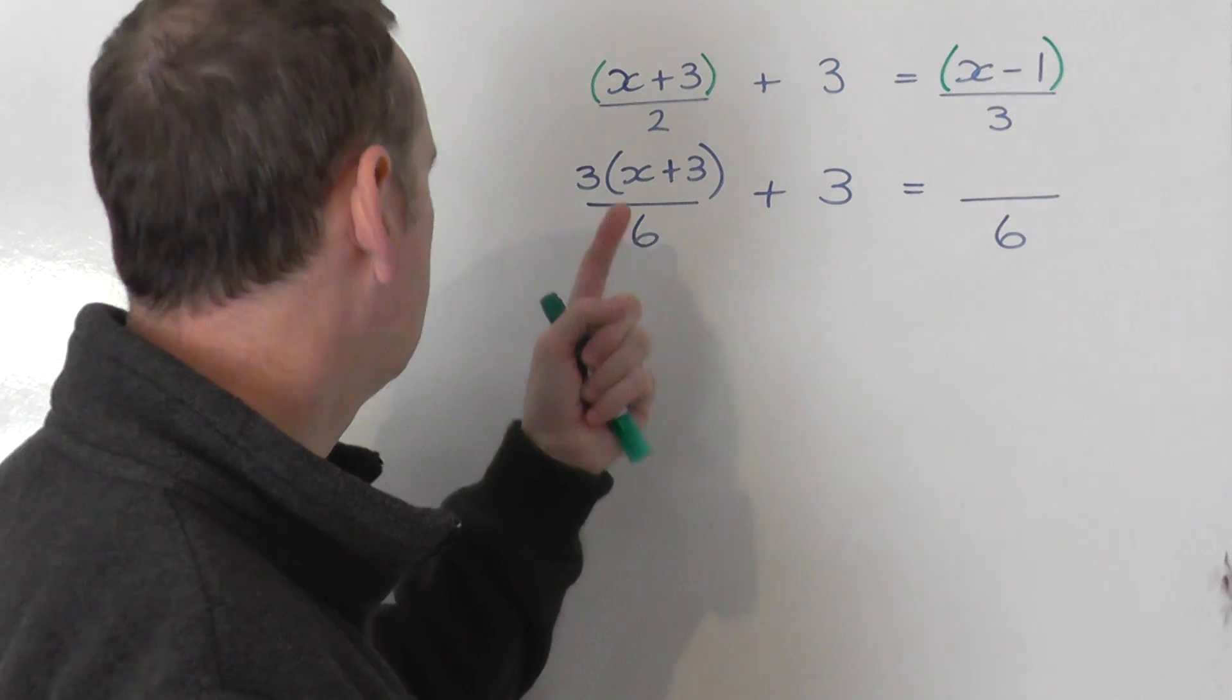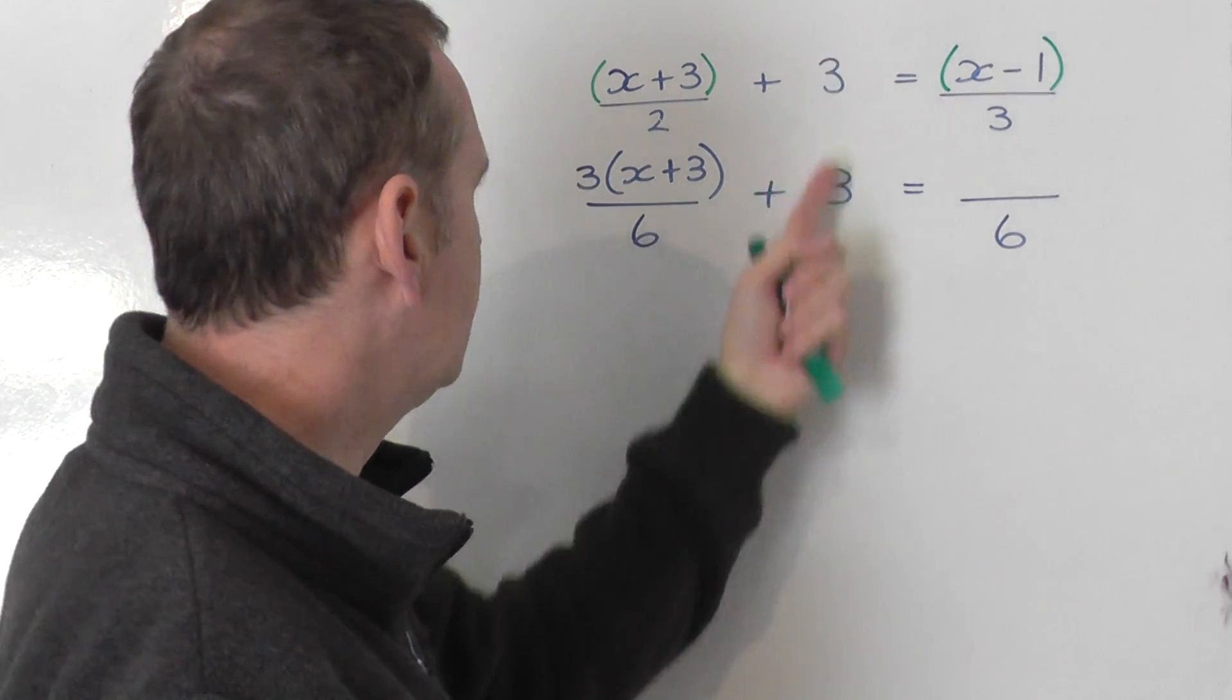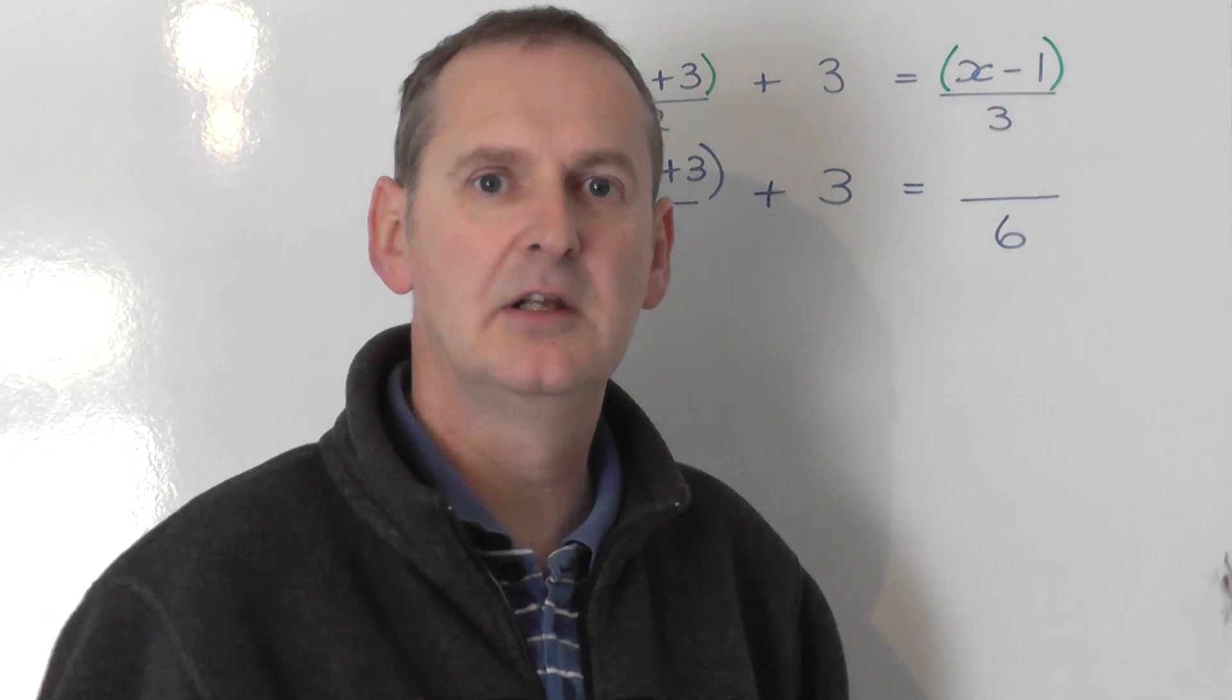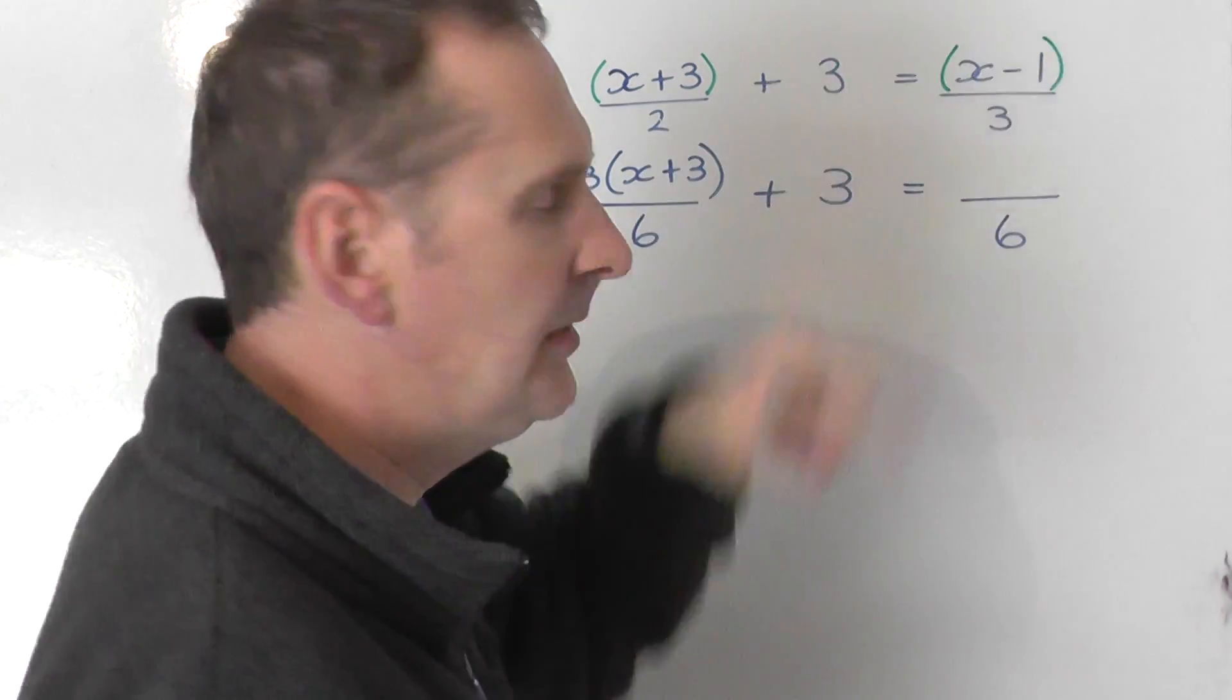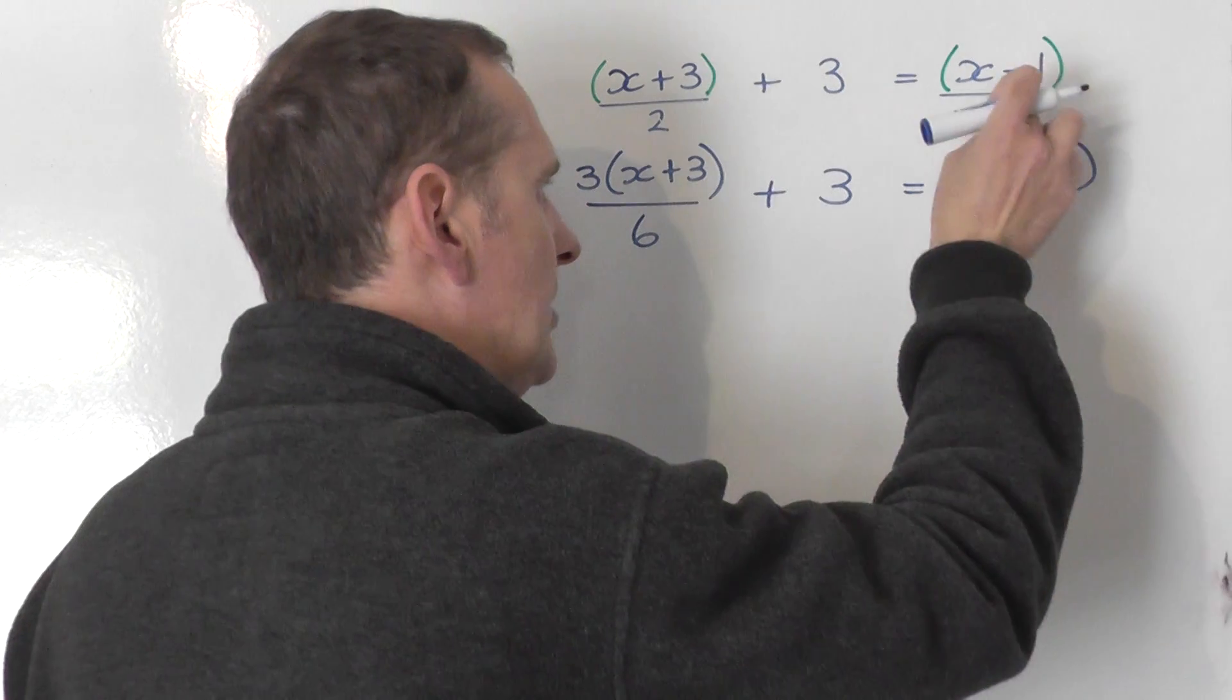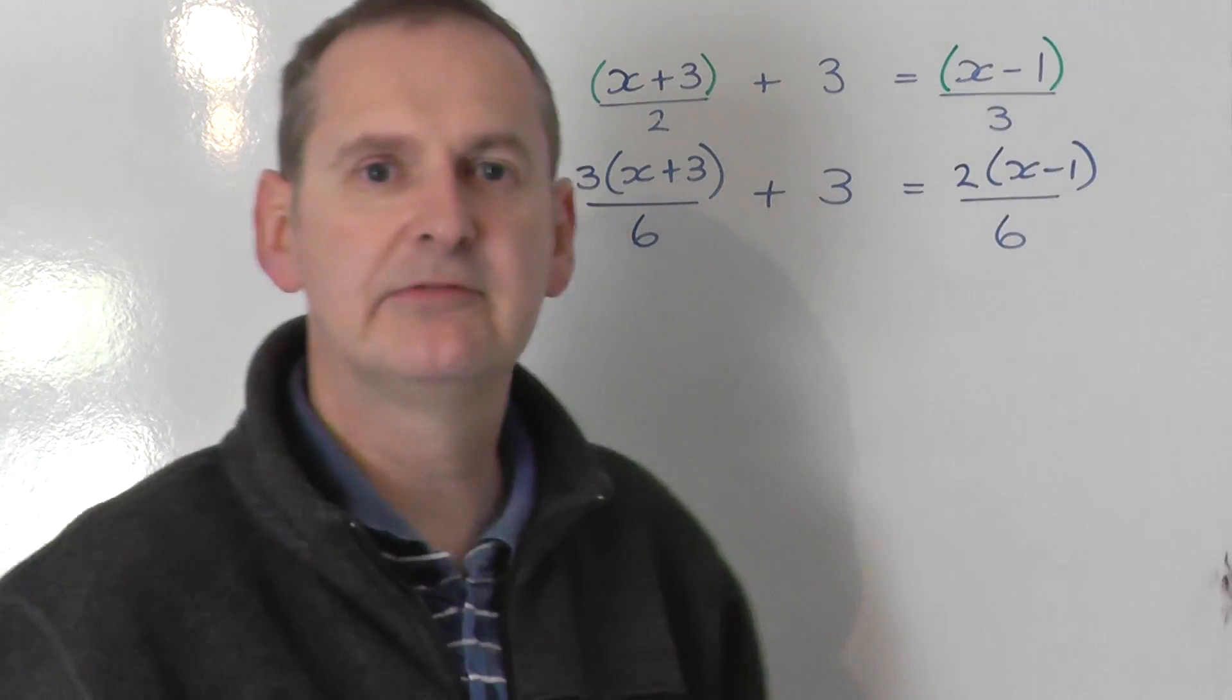So I've now changed that 2 to a 6. Leave this alone, and I need to change this now, 3 into a 6. I do that by doubling the right-hand side. So double the right-hand side on the bottom, so I double the right-hand side on the top. So the top becomes 2 lots of x minus 1. So I've doubled the bottom, I double the top. So that is the same as that. Those two fractions are the same.